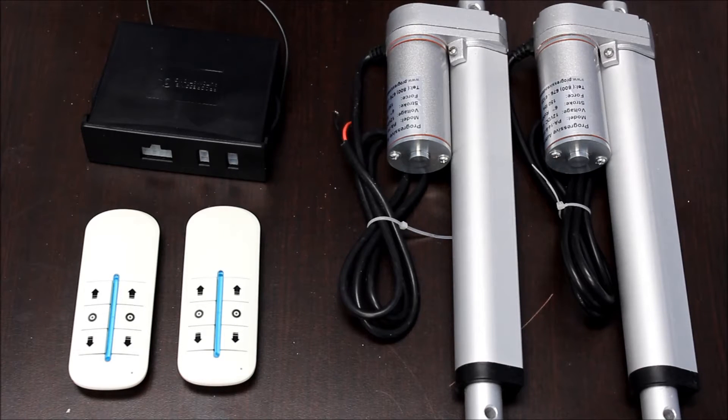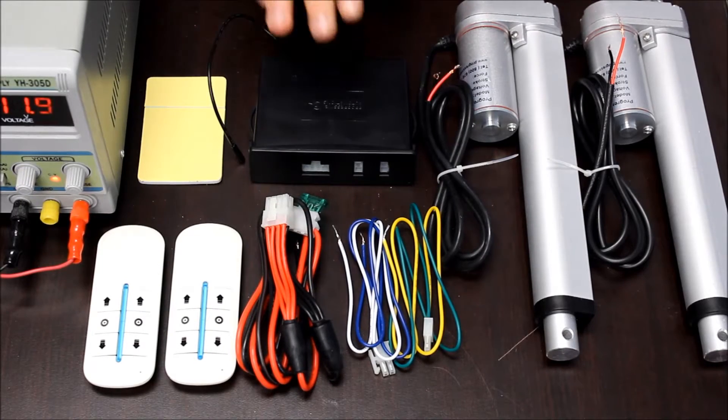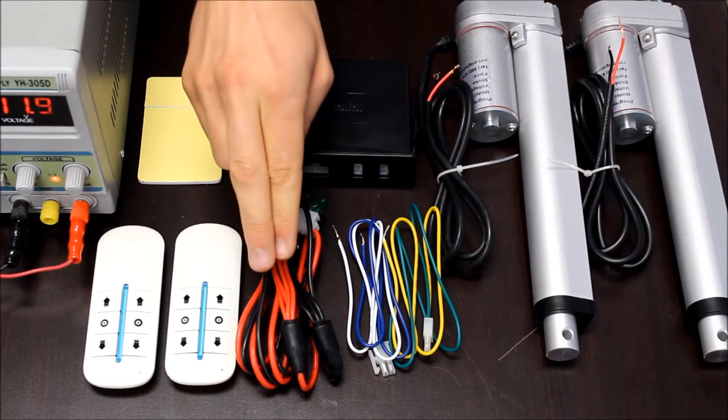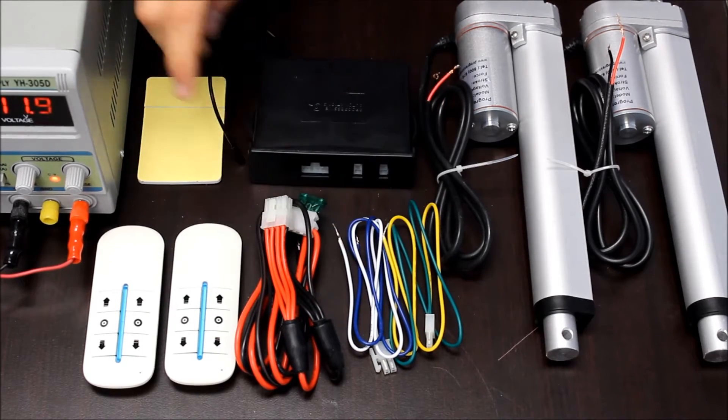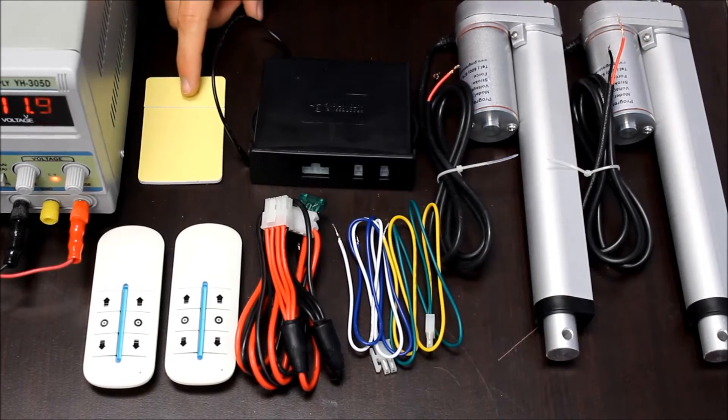First we will go over what comes with the unit and then go over the wiring. The PA28 comes with the control box, two remotes, a power wiring harness, and two actuator wiring harnesses. It also comes with a mounting pad to stick it to your application.